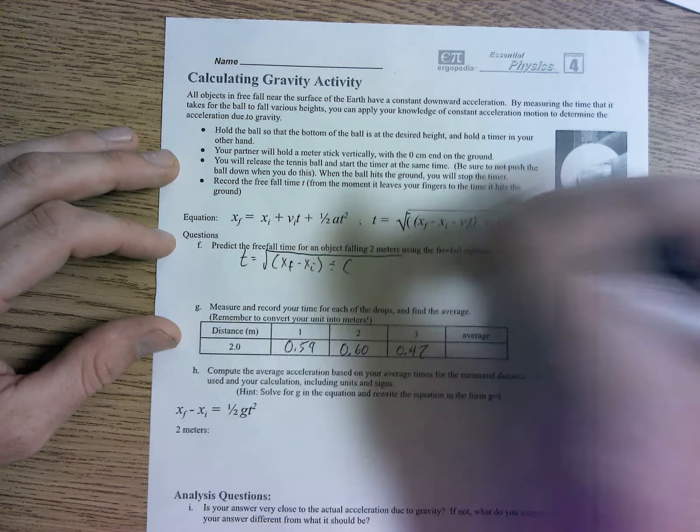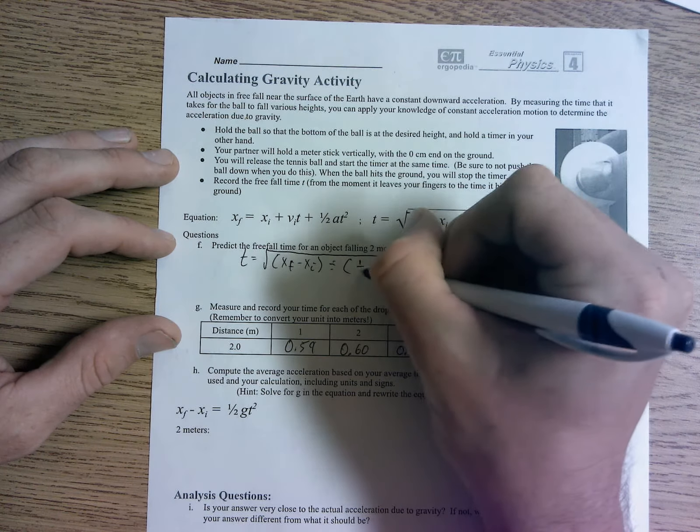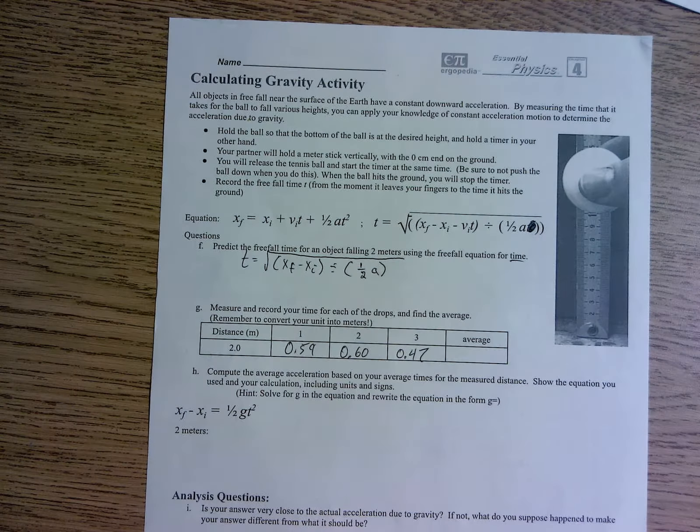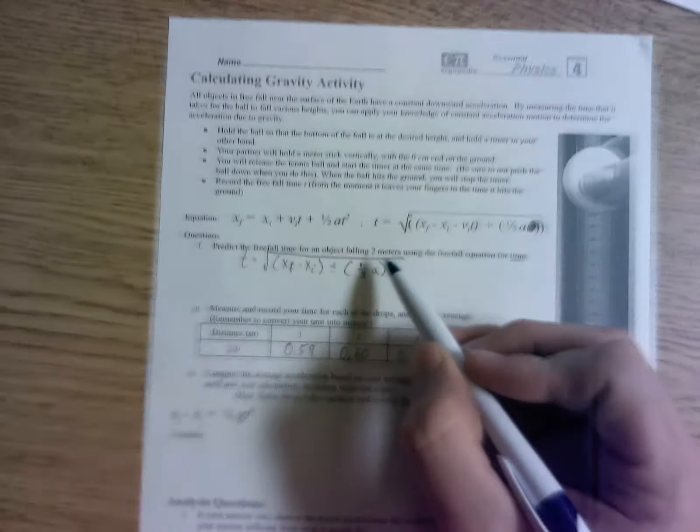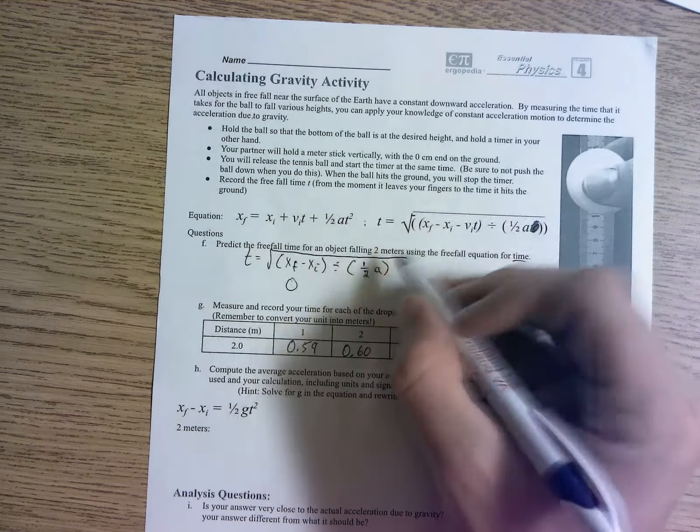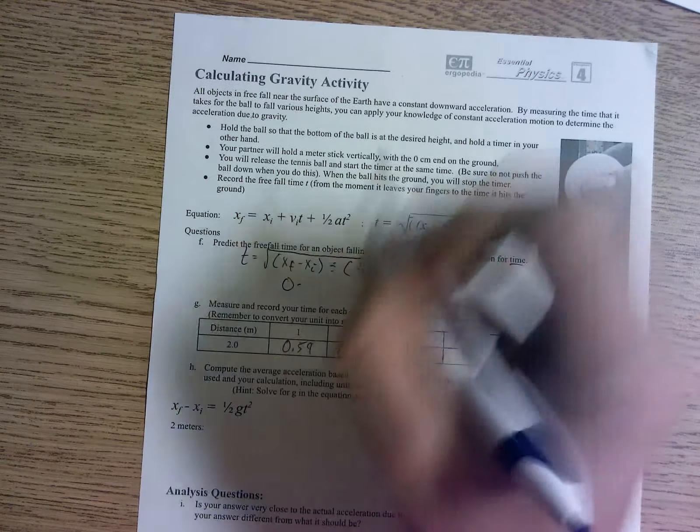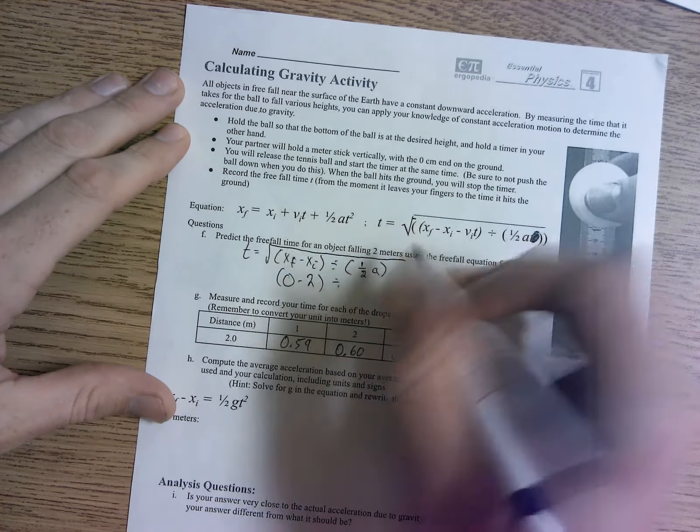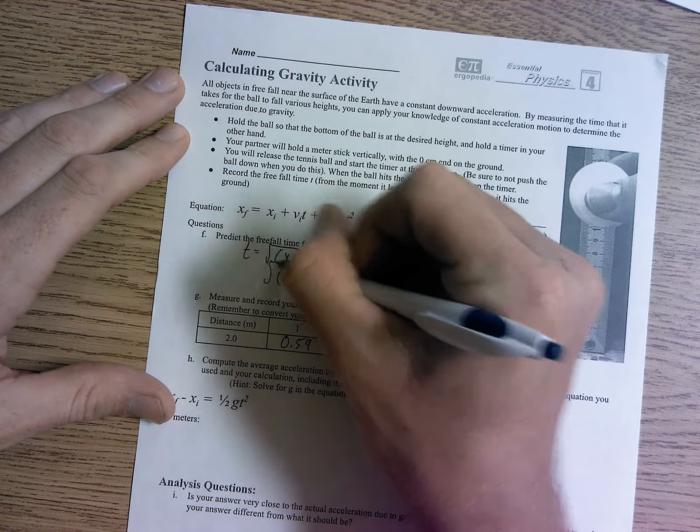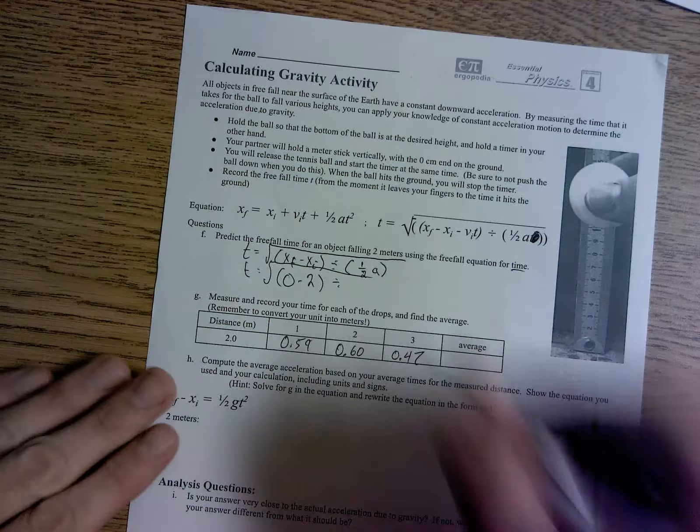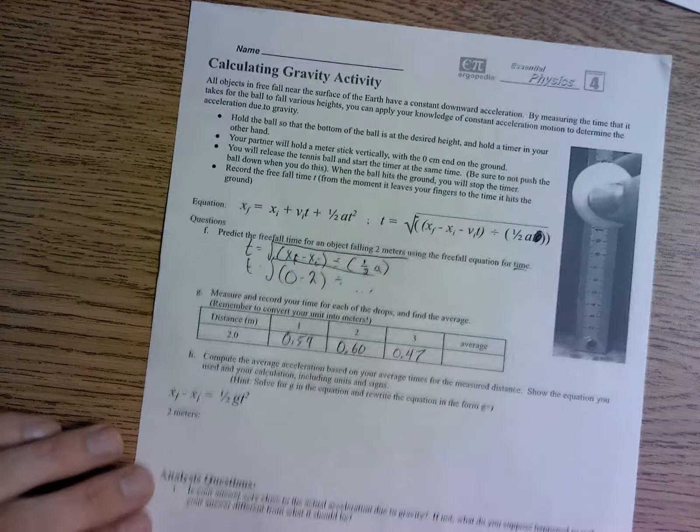And then we're going to have one half of a, and you're going to use those values. Well, if it fell two meters, what's your x final? I think it'd be zero. It fell two meters, so your x initial would be two, right? And then you divide all that stuff. Remember, acceleration is negative 9.8. I'll let you guys get that answer.